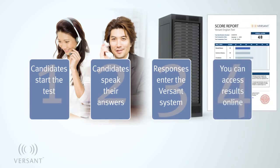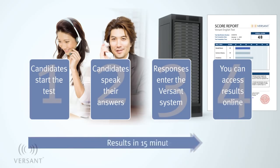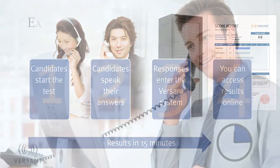In Step 4, the test administrator can retrieve one or many scores quickly in an easy-to-understand Versant score report. Depending on the type of testing required, the automated Versant tests can be administered and scored in 15 minutes. The Versant testing process is that simple.